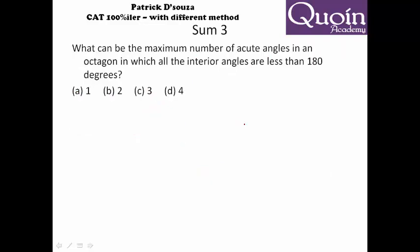What is the maximum number of acute angles in an octagon? Octagon is eight-sided. To find the external angle of a polygon, the external angle is 360 divided by number of sides, in which case eight. For regular polygon, in this case it becomes 45 degrees. So if this is 45 degrees, this becomes 135 degrees.